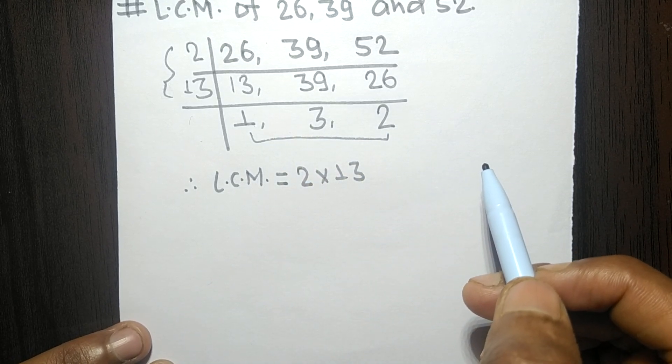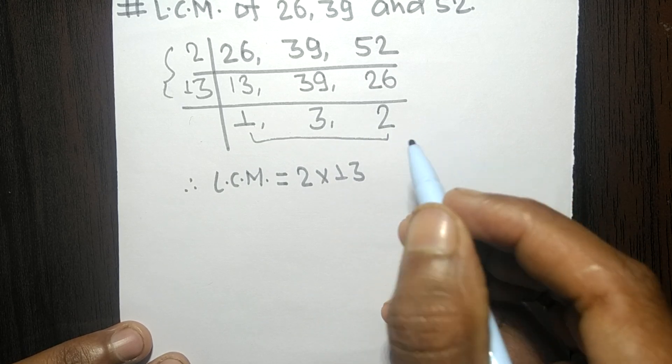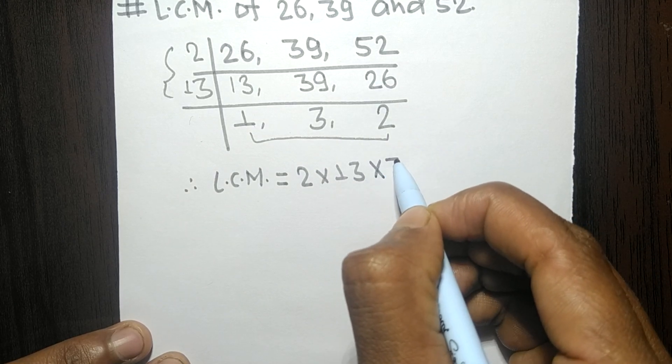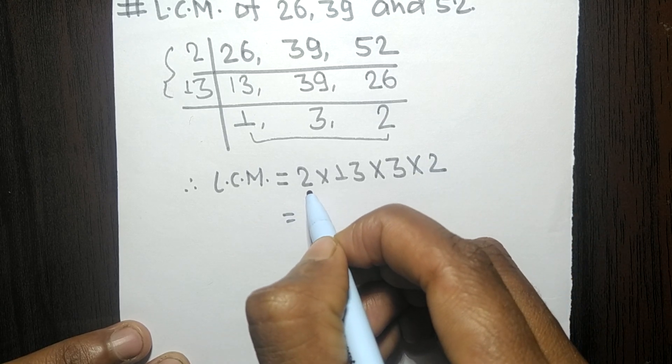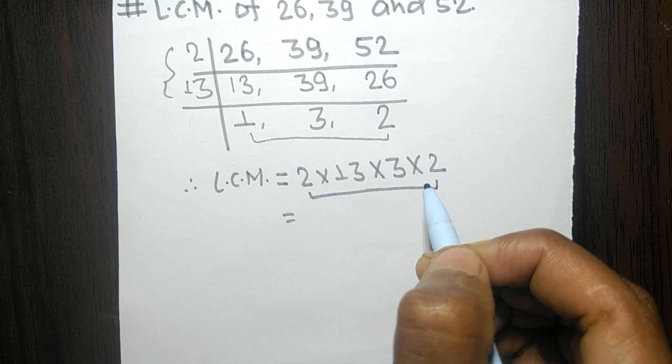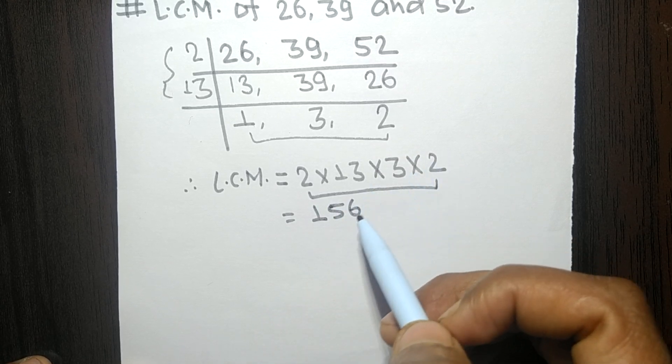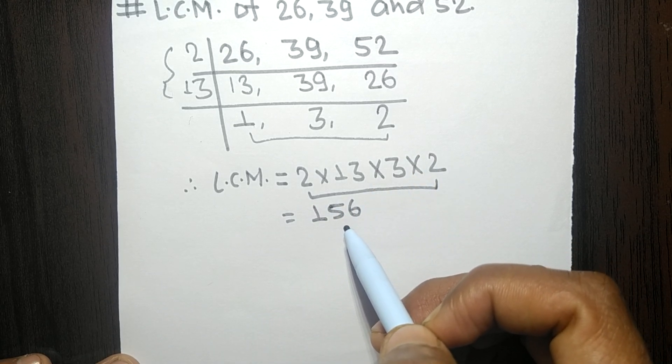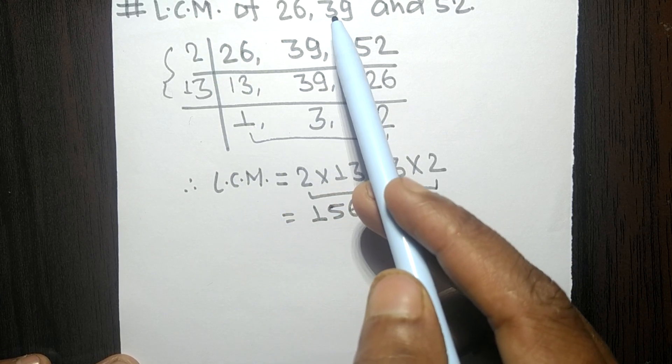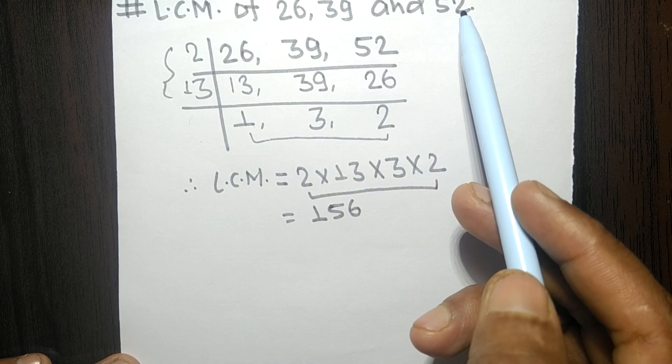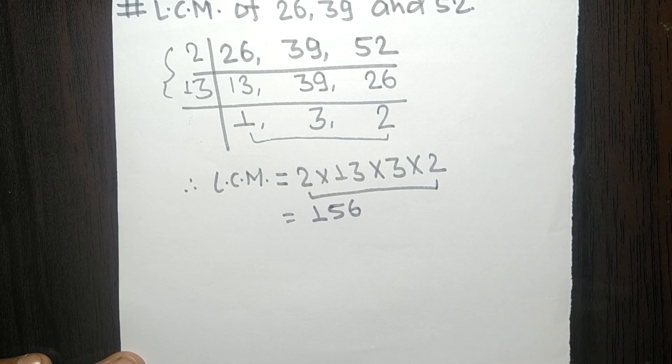So multiplied by 3 and 2. So by multiplying all these numbers we get 156. So 156 is the LCM of 26, 39, and 52. So this much for today and thanks for watching.